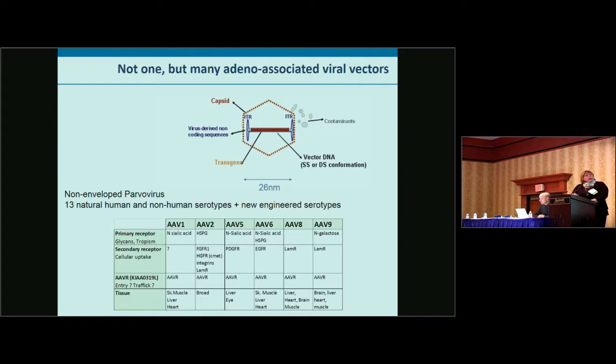It's important to note that different serotypes use different primary receptors. Glycans determine the tropism of the capsids and are different between serotypes. There are also secondary receptors used for cellular uptake, and an AAV receptor that is essential for transduction for all these serotypes, though its role in regulating entry or trafficking is not fully clear. All these characteristics determine the tissue tropism for the different serotypes, which are variable and useful for different gene therapy applications.